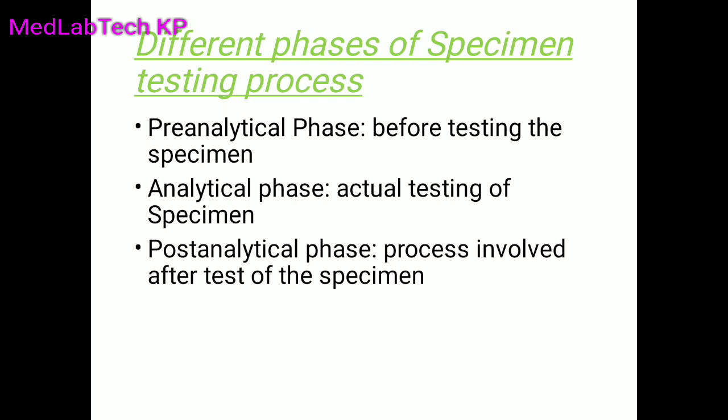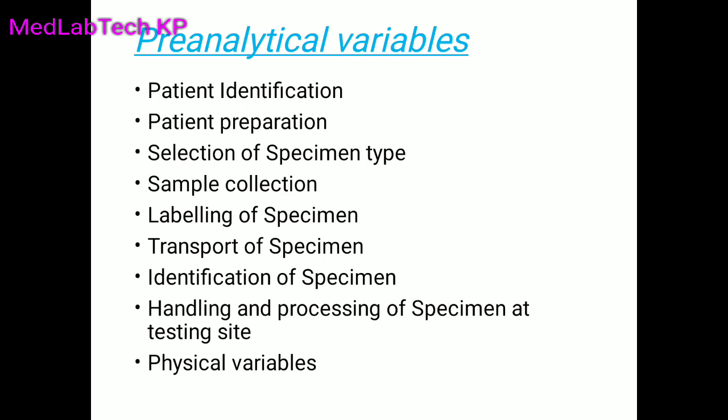Let's look at the factors affecting pre-analytical errors. The first is patient identification — it is the most important step before sample collection. The correct method includes the patient's full name, age, date of collection, and registration number from the hospital, all recorded on the requisition form. If any information is missing or incorrect, the laboratory report will be inaccurate.